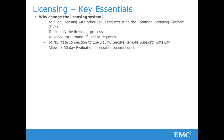First of all, why are we changing the licensing system? It will align DPA licensing with other EMC products using the common licensing platform. It will simplify the licensing process, which is currently very manually driven. Currently, licenses can take up to 24 hours to turn around. With the new system, an activated license will be available to the customer immediately.